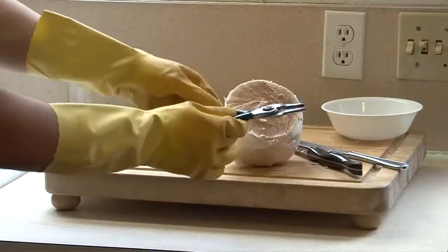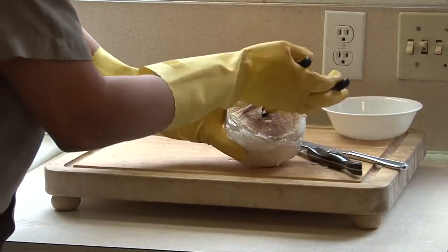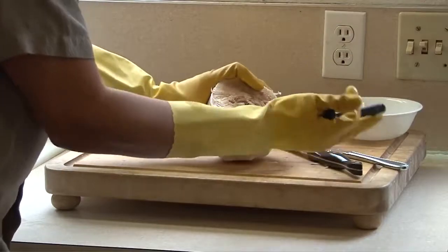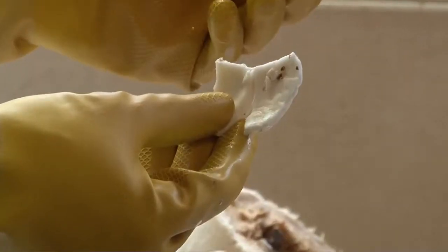Then to get the meat out, get a plier and start to widen the hole in the coconut. Then with a flat knife or a strong spoon, start to remove the meat from the coconut.